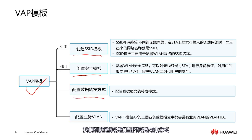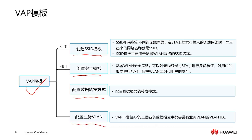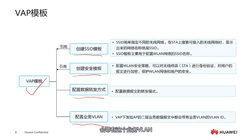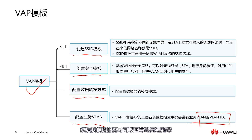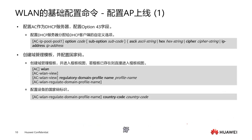Third is the data forwarding method. We have two methods: tunnel forwarding and direct forwarding. Another important aspect is configuring the service VLAN. Within the VAP template, our VAP sends layer 2 data packets to the AP that carry the service VLAN. We must configure the correct service VLAN, then our services can be properly activated.